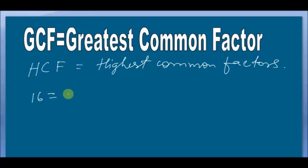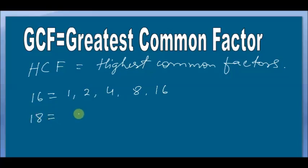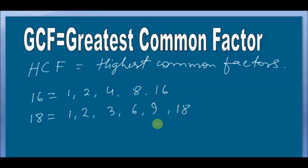So the factors of 16 are 1, 2, 4, 8, and 16 itself. Now, the factors of 18 will be 1, 2, 3, 6, 9, and 18 itself. So what are the greatest common factors? They are the factors which are common in both numbers and also the greatest one.